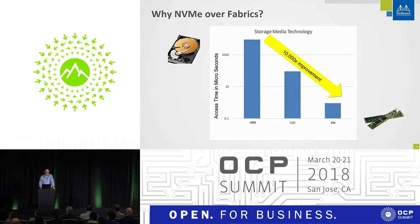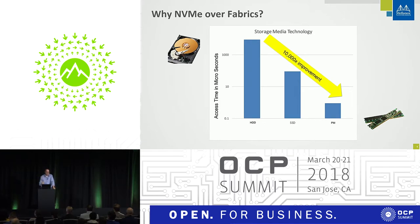Now think of walking around the block to the original Joe's — about 500 feet. That's the distance between an SSD and the new persistent memory technology. Storage is getting 10,000 times faster in the next few years; it's already 100 times faster. So to do composable infrastructure, we need high-performance technology like NVMe over Fabrics.